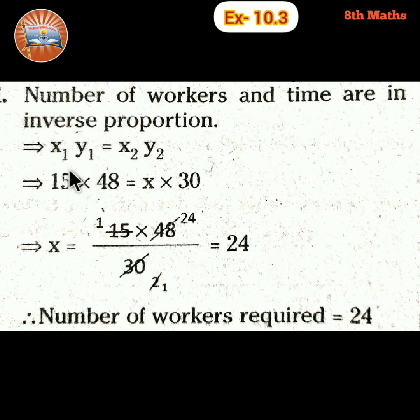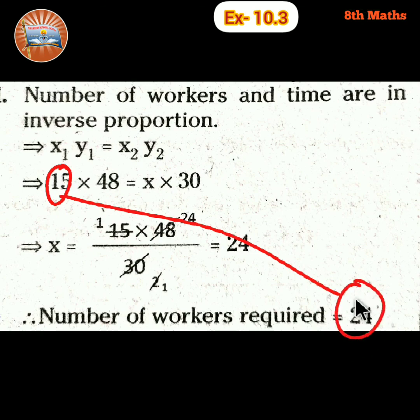So if you observe, here is the 15 workers and here is the 24 workers. So number of workers increased, so time decreased, right? Clear. This is the inverse proportion. I hope you understood. Thank you.